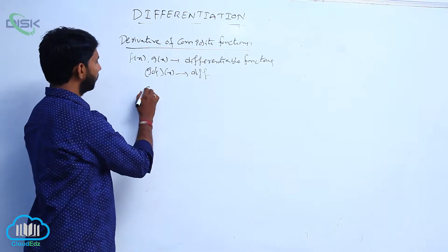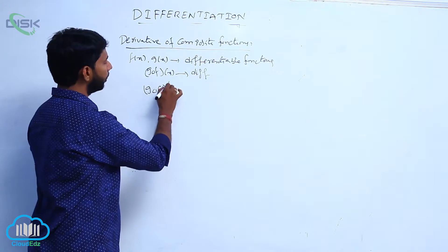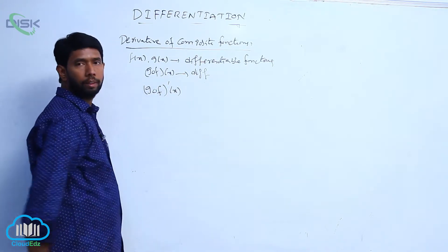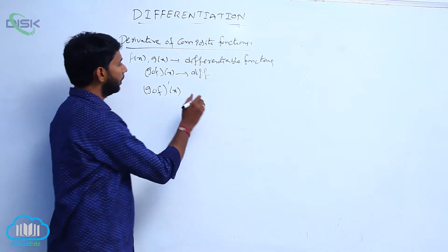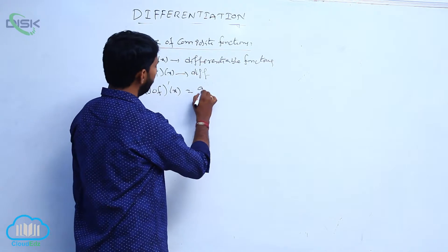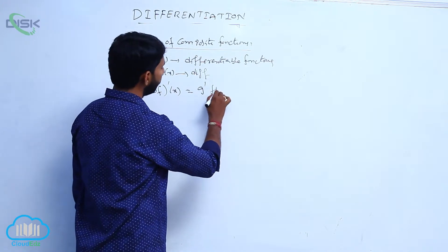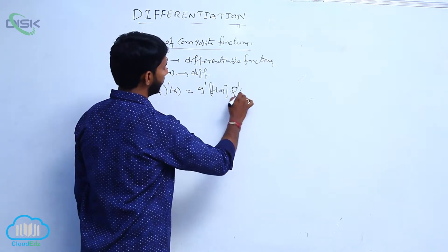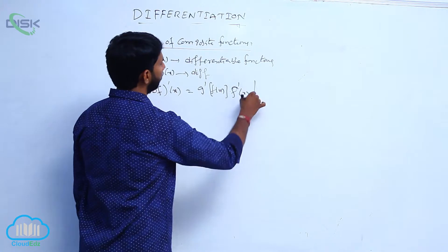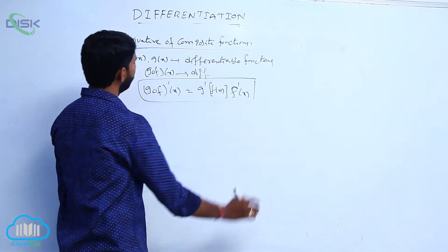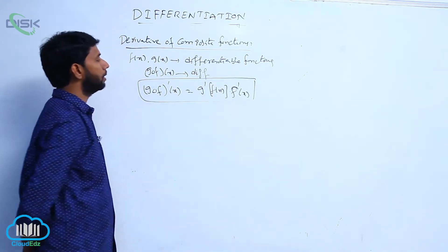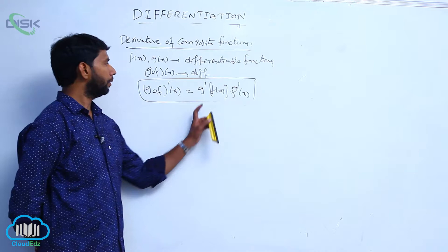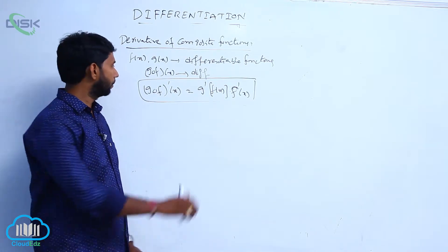Then g circle f whole dash of x is equal to g dash of f of x into f dash x.